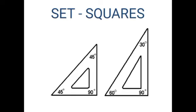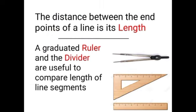Set squares are used to draw parallel and perpendicular lines. They can also be used to construct angles of 30 degree, 45 degree, 60 degree, and 90 degree. The distance between the end points of a line is its length. A graduated ruler and the divider are useful to compare length of line segments. Sometimes the set square is also used to measure the length of line segments since they are graduated.